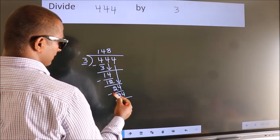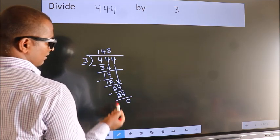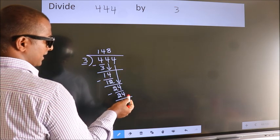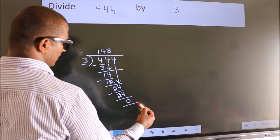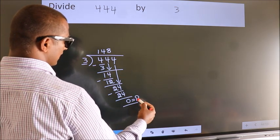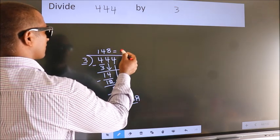Now, we subtract. We get 0. No more numbers to bring it down. So, we stop here. This is our remainder. This is our quotient.